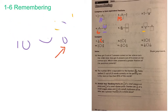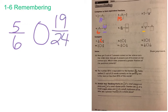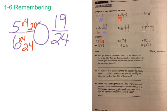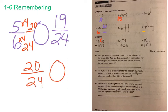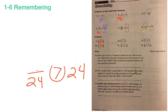You can also get a common denominator by knowing common factors. For number 10, we're comparing five-sixths to nineteen-twenty-fourths. We know six times four is equal to twenty-four, so we multiply top and bottom by four. Six times four equals twenty-four, and five times four equals twenty. Now we have a common denominator, comparing twenty-twenty-fourths to nineteen-twenty-fourths. Twenty-twenty-fourths is bigger, so in the original problem, five-sixths is bigger than nineteen-twenty-fourths. Remember — the alligator mouth wants to eat the bigger fraction.